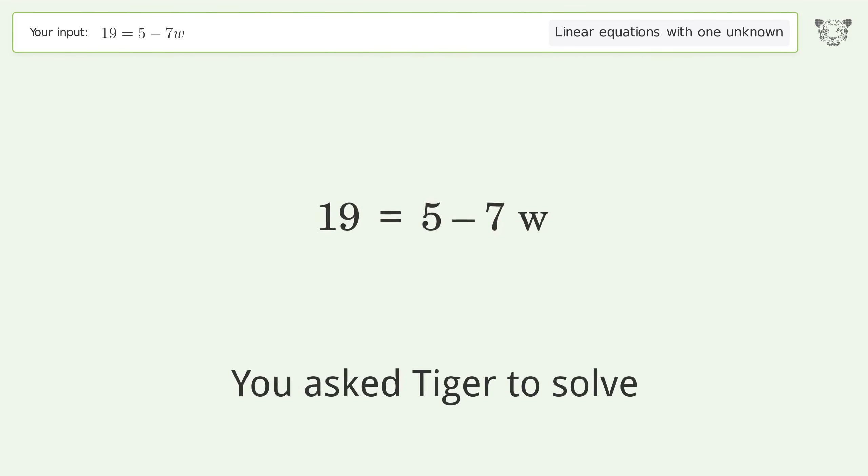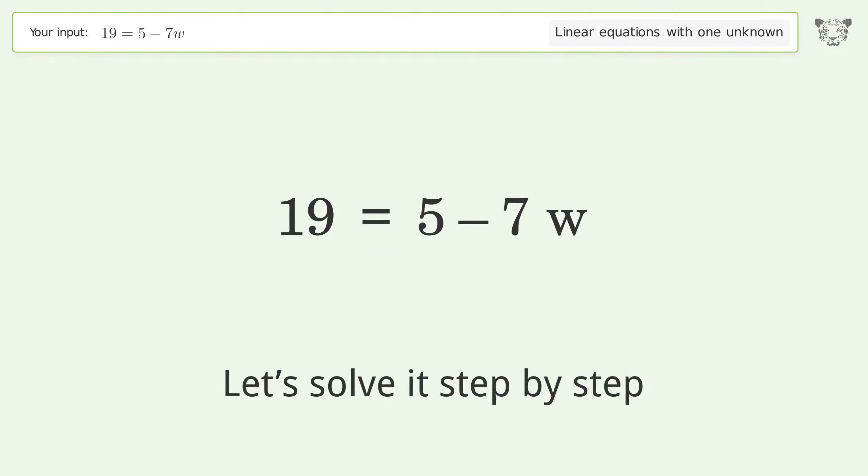You asked Tiger to solve this. It deals with linear equations with one unknown. The final result is w equals negative 2. Let's solve it step by step. Swap sides.